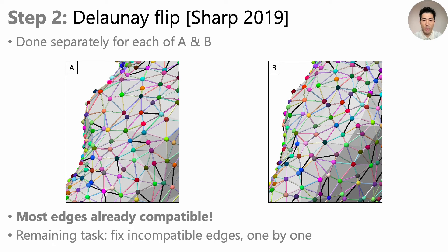We do the same on the other surface as well. Now, if we check for the edge compatibility, we see that most edges are already compatible at this point. This is thanks to our assumption that the input vertex images are of some good quality. Our remaining task then is to fix these sparsely distributed incompatible edges, one by one.